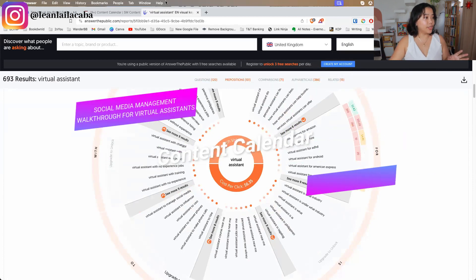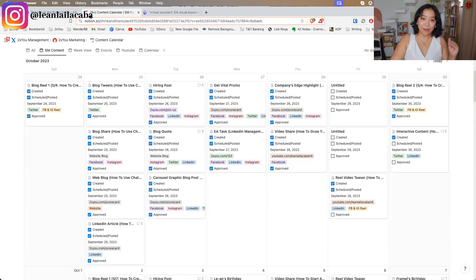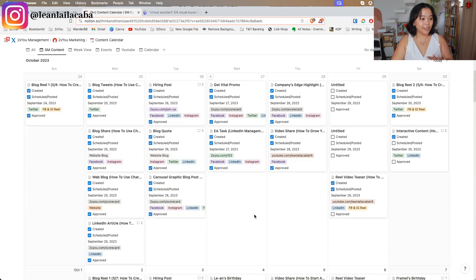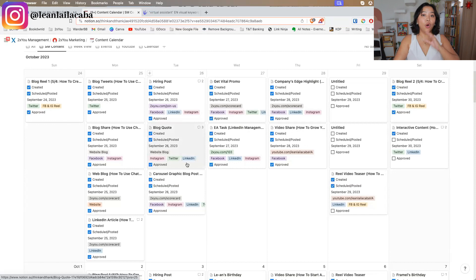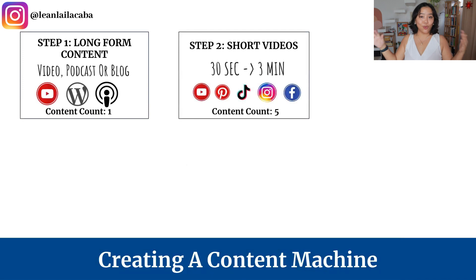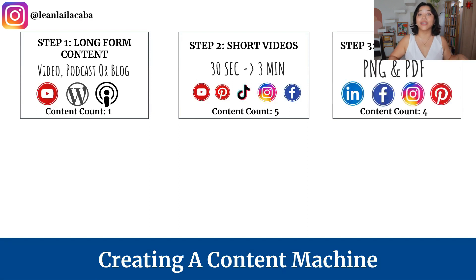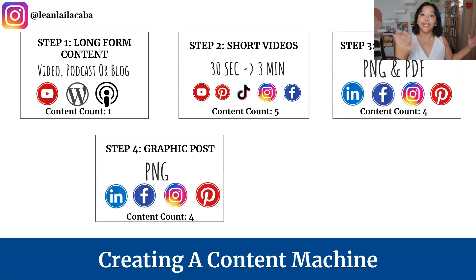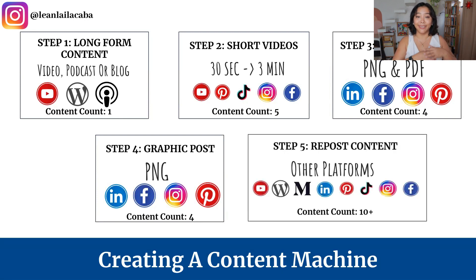Next, you want to create a content calendar. For 2XU, this is our actual October content calendar — I'm showing you the behind the scenes. We've built what I call a 'content machine': a big long-form piece of content, like a video, podcast, or blog, which is then turned into short videos, a carousel post breaking down what was talked about, a graphic post, and content that can be reposted or turned into another blog post. The cycle continues.